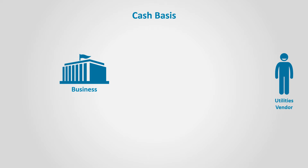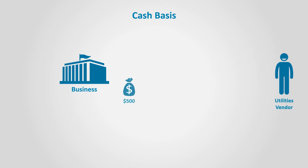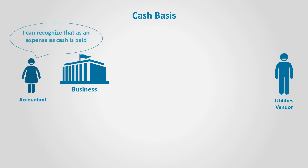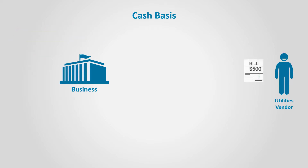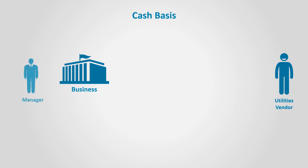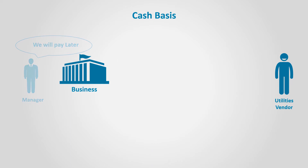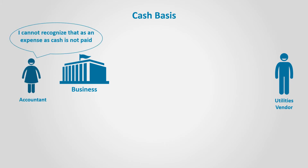The same thing applies with expenses. Assume that a business receives a utility bill for $500. The business pays the bill. According to the cash basis, this is regarded as an expense, because cash is paid for utilities. However, if the business received the bill but didn't pay it, this is not considered an expense based on cash basis accounting, since cash is not paid.